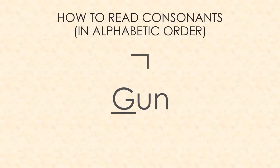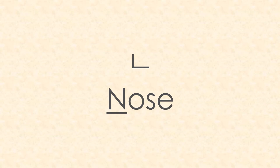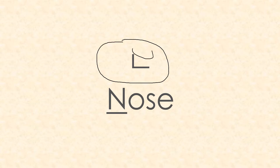Now we're going to learn how to read the consonants in alphabetical order. We start with a simple G sound — 'giyeok' — and it looks like a gun. If you look at it like this, it looks like a gun and makes the G sound. So remember, giyeok is G for gun. Next we have N for nose — 'nieun' — and it actually looks like a person's nose. N sound.